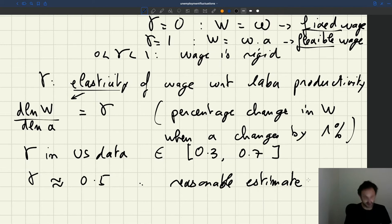So what does that mean? An elasticity of 0.5, it means that if productivity goes up by 1 percent, your wage goes up by 0.5 percent. That's what the evidence seems to suggest. That's something that's good to keep in mind for when we're going to do more quantitative analysis of the matching model.